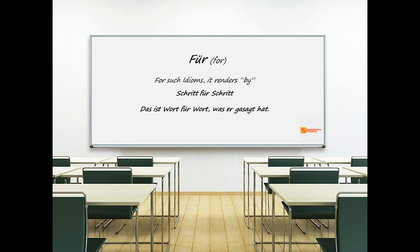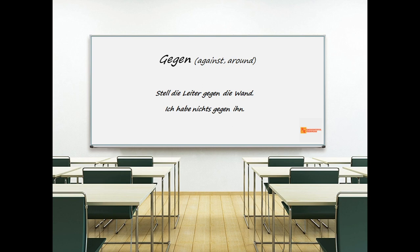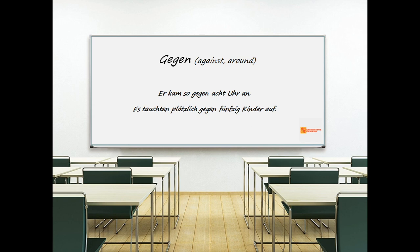'Gegen' means 'against' or 'around'. The primary meaning is 'against': 'Stell die Leiter gegen die Wand' — put the ladder against the wall. 'Ich habe nichts gegen ihn' — I have nothing against him. A common second meaning of 'gegen' is 'approximately' or 'around' with numerical quantities. Example: 'Er kam so gegen acht Uhr an' — he arrived around eight o'clock. 'Es tauchten plötzlich gegen 50 Kinder auf.'